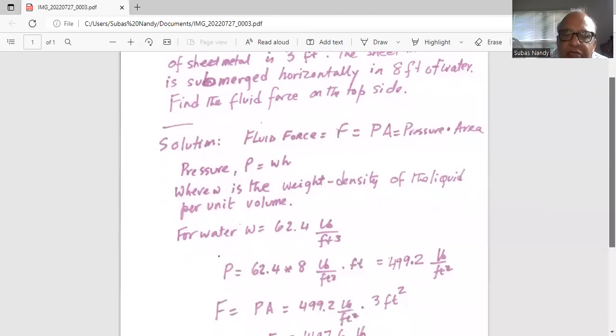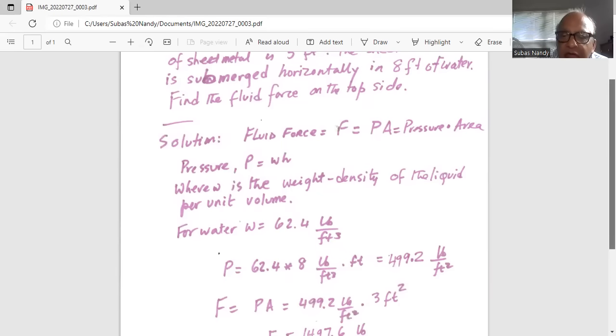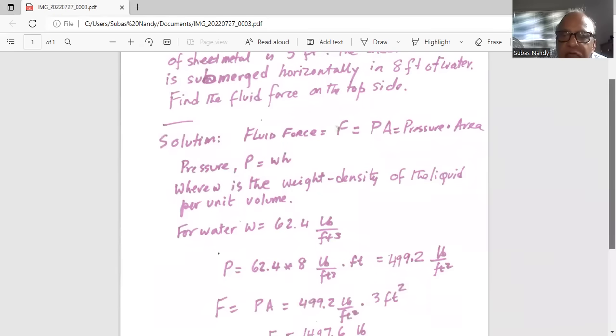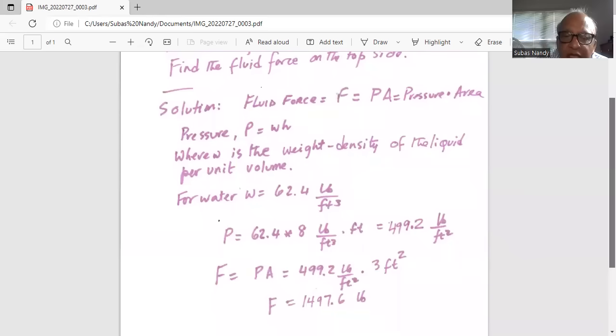So pressure is 62.4 multiplied by the height eight. So 62.4 pounds per feet cubed multiplied by eight feet is 499.2 pounds per feet squared. That's the pressure. And force is pressure times area.